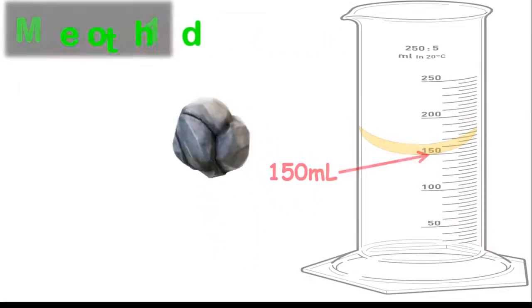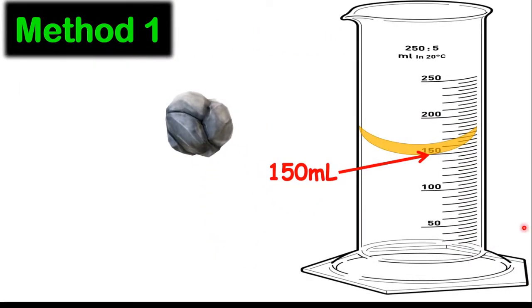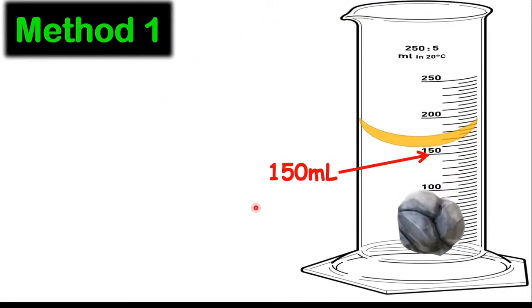And so I'm going to show you two methods in which we can use to measure the volume of this irregularly shaped object. And so in method one, we are going to pour some liquid into a measuring cylinder and take that measurement. So for example, this measurement is 150 mL. Now, the next step you should do is to put this carefully into your measuring cylinder. Now, notice the volume starts to rise. And now our new volume is now 200 mL.